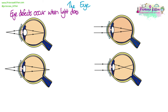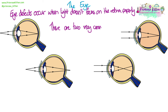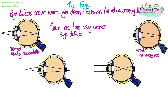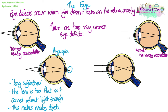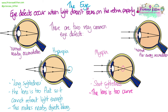Eye defects occur when the light doesn't focus on the retina properly. There are two very common visual defects. The diagrams show the normal way we accommodate for nearby and far away objects. If you suffer from hyperopia, it means you are long-sighted. Although you can see far away objects well, your lens is too flat so it can't refract the light enough, meaning the focus point isn't on the retina, making nearby objects appear blurry.